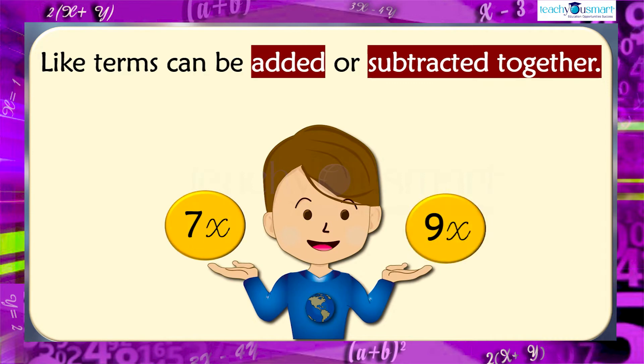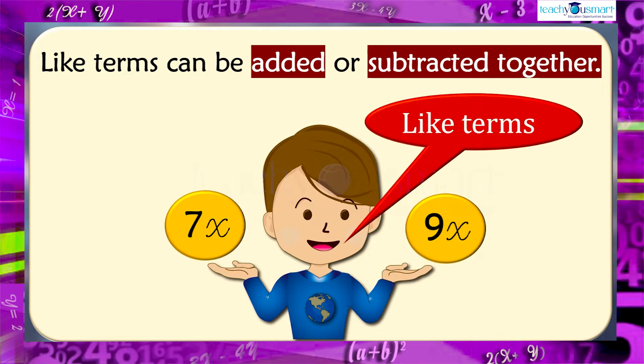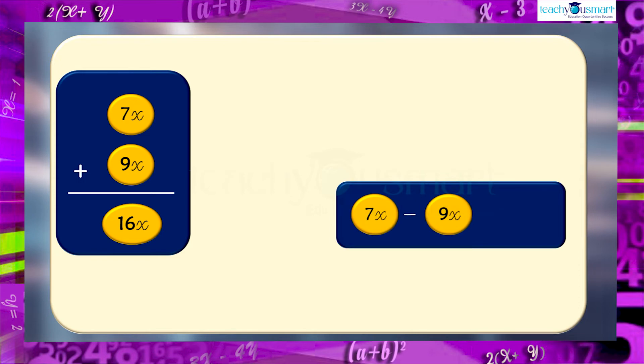7x and 9x is a pair of like terms. Isn't it? Yes, of course. Let's add these. 7x plus 9x equals 16x. Also, subtract it. 7x minus 9x equals minus 2x.